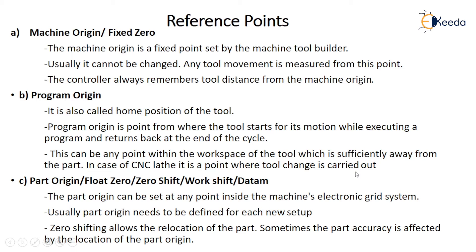In case of CNC lathe, program origin is the point where the tool change is carried out. During machining, after completing turning in the first pass and at the end of the cycle, the tool will go to the program origin. If we have to do a grooving operation, then the next tool will be the grooving tool. That indexing will happen and the next tool will come to the program origin.